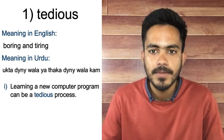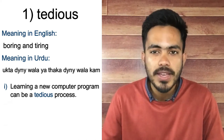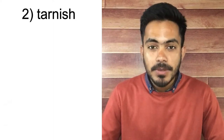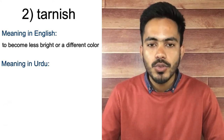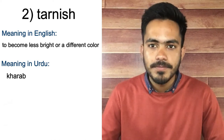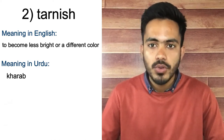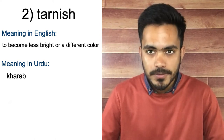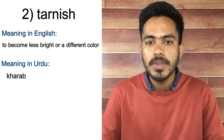Second example: if there is a job that is very boring, we can say 'It's a tedious job.' On number two we have 'tarnish'. Its meaning in English is to become less bright or a different color. In Urdu it means خراب — if something's color fades or changes, it is called tarnish in English.